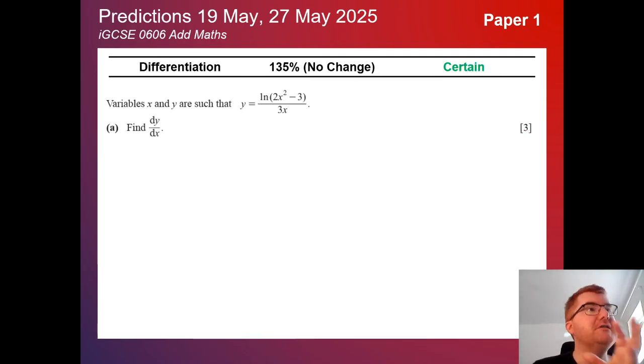And differentiation, no surprise, this is really high at 135%, making sure you can differentiate your natural logs and making sure you can use the product and quotient rules.